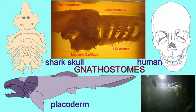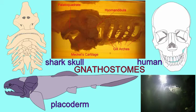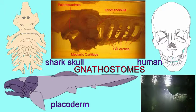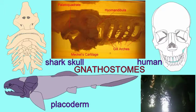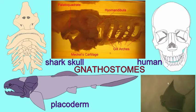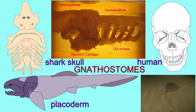A second arch became the hyomandibula, which would support the first arch. And so it was that the migration and modification, perhaps after this genome duplication event, of the gill arches which were already there gave the jawed vertebrates their jaws.